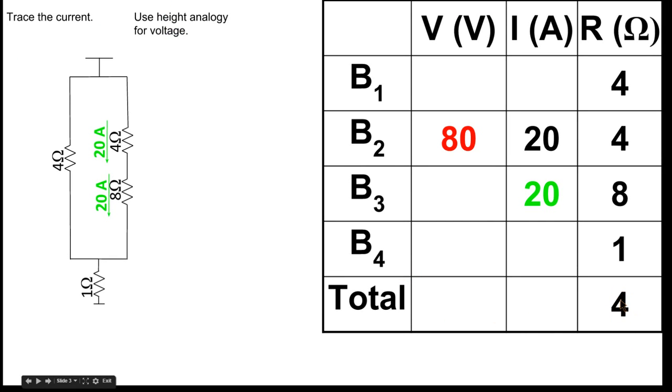So now with our 4 ohm equivalent resistance put into our VIR chart, we can figure out a few more things. So we were given the fact that there is 20 amps going through this 4 ohm resistor, so 20 times 4 gives us 80.